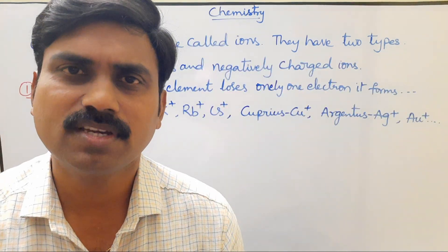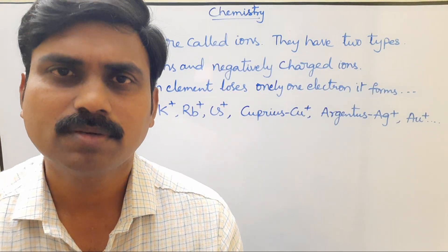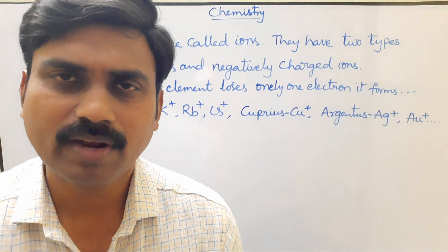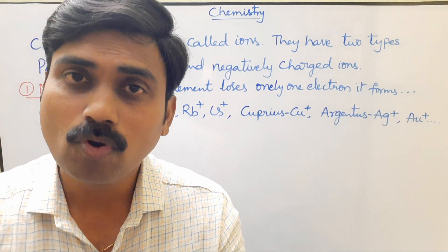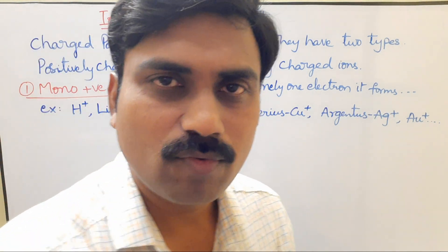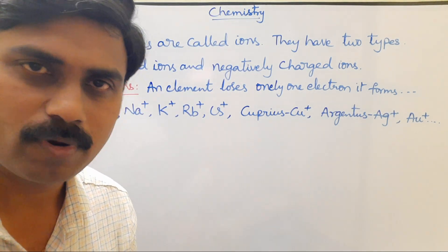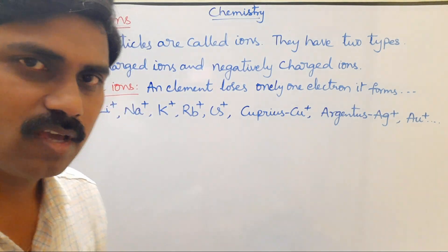Positively charged ions are again classified into different types. First: mono-positively charged ions. When an element loses only one electron, it forms a mono-positively charged ion.